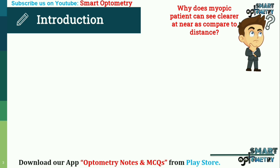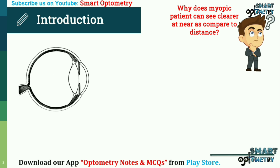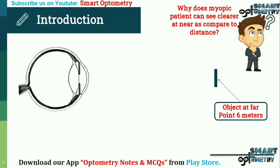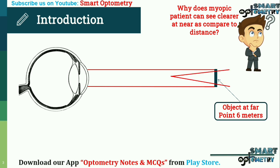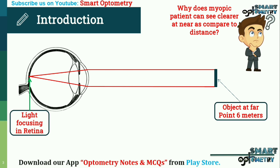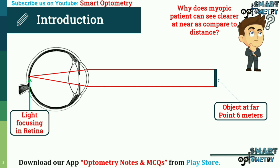Why does a myopic patient see clearer at near compared to distance? In a normal eye, when an object is between six meters and infinity, the rays coming from the object focus on the retina and we see the object clearly. This point is called the farpoint.